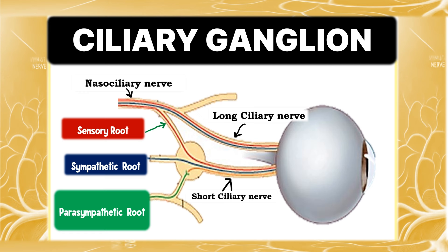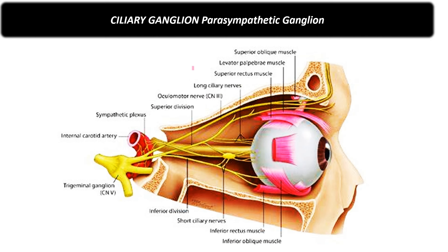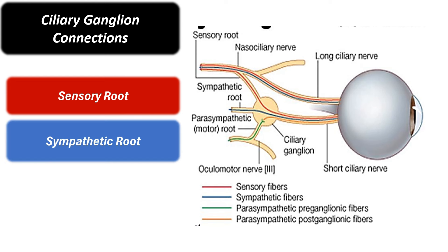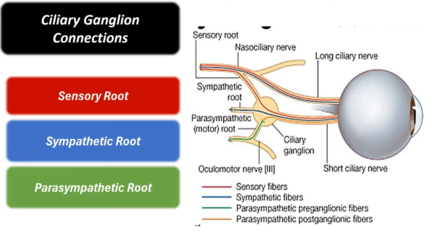Hello and welcome to Insight Ophthalmology. This is Dr. Amrit welcoming you to another lecture. Today we are going to talk about really high yield points on the ciliary ganglion. The ciliary ganglion is a parasympathetic ganglion situated near the apex of the orbit, between the optic nerve and the lateral rectus muscle. We will study the sensory root, the sympathetic root, and the parasympathetic root — the three important connections of the ciliary ganglion.